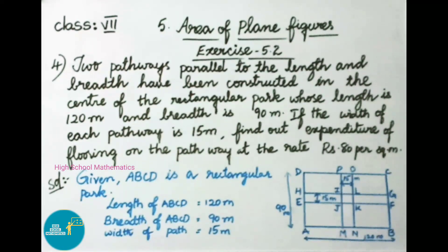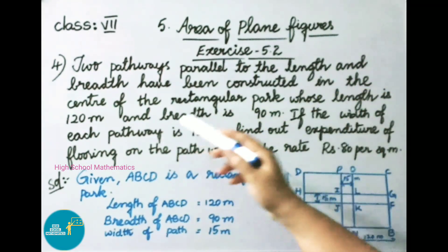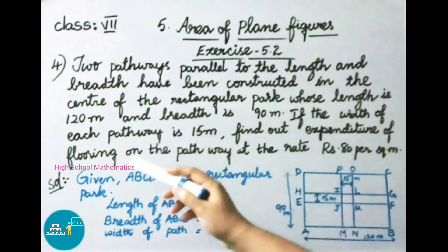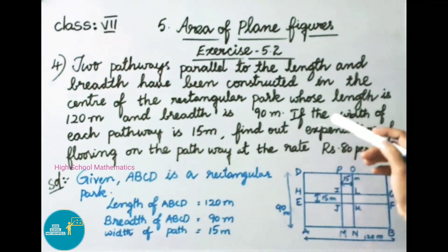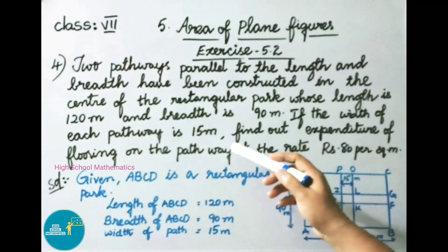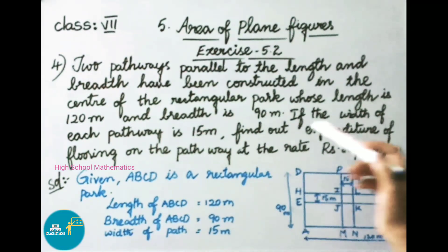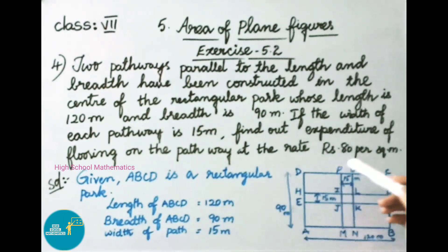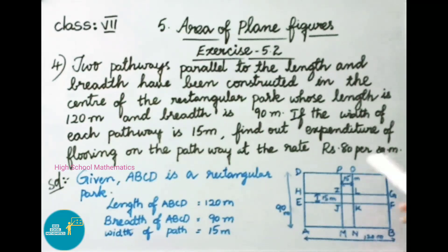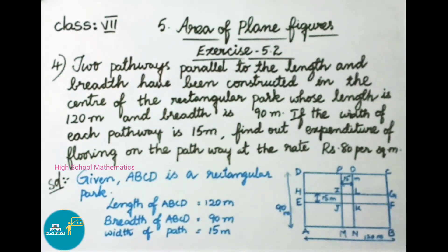See now question number 4. Two pathways parallel to the length and breadth have been constructed in the center of a rectangular park whose length is 120 meters and breadth is 90 meters. If the width of each pathway is 15 meters, find the expenditure of flooring on the pathway at the rate of 80 rupees per square meter. Given: ABCD is a rectangular park, length is 120 meters, breadth is 90 meters, and width of path is 15 meters.